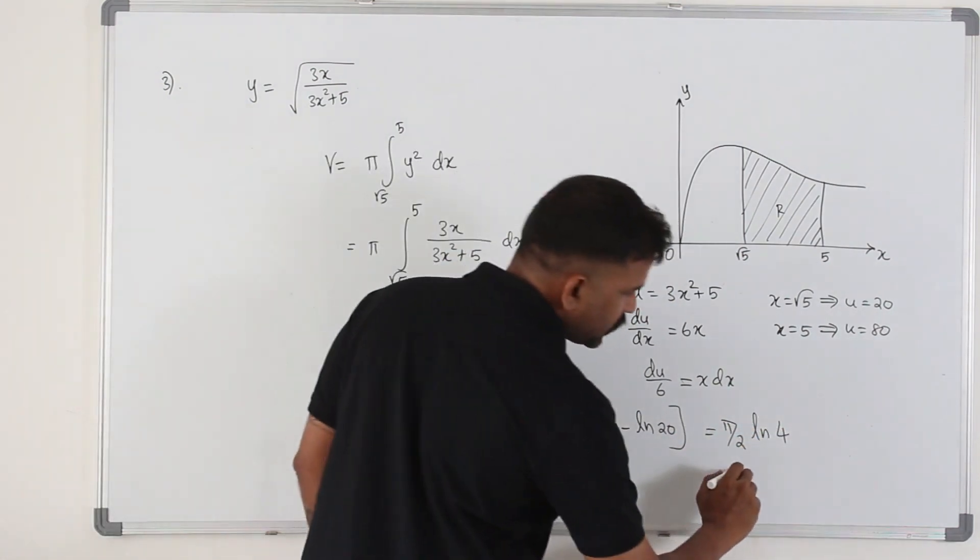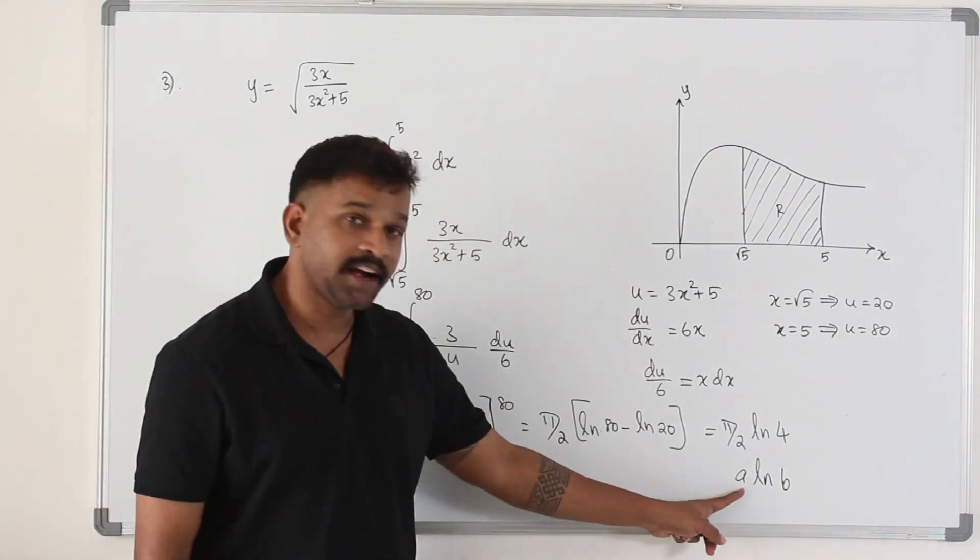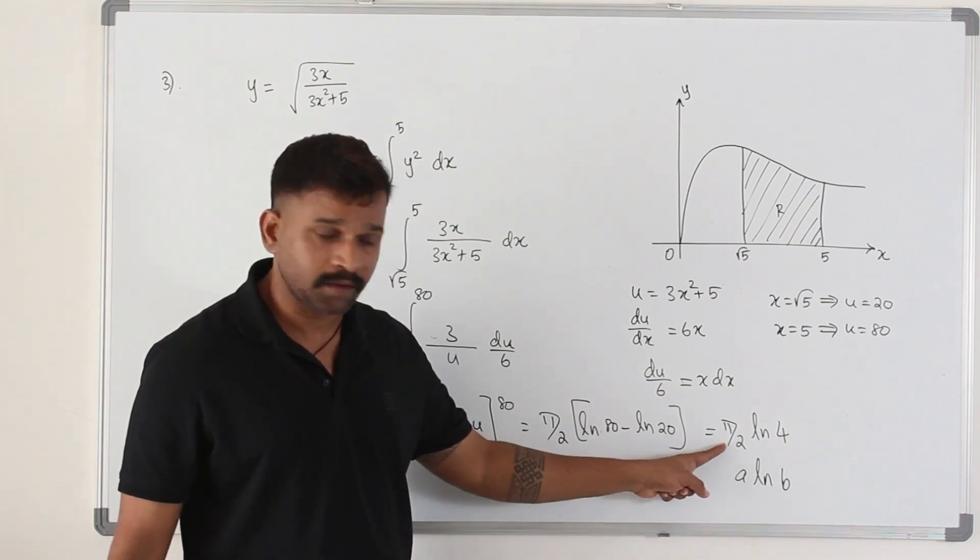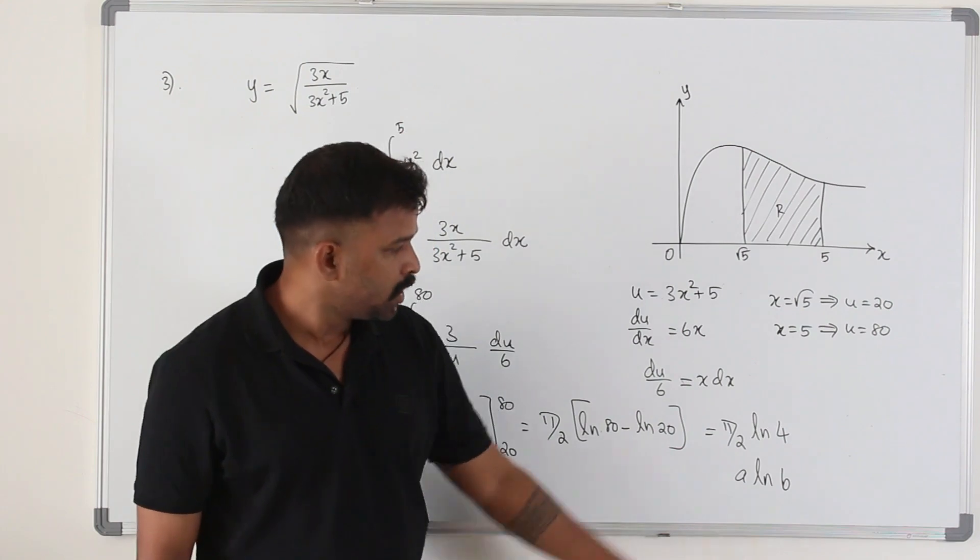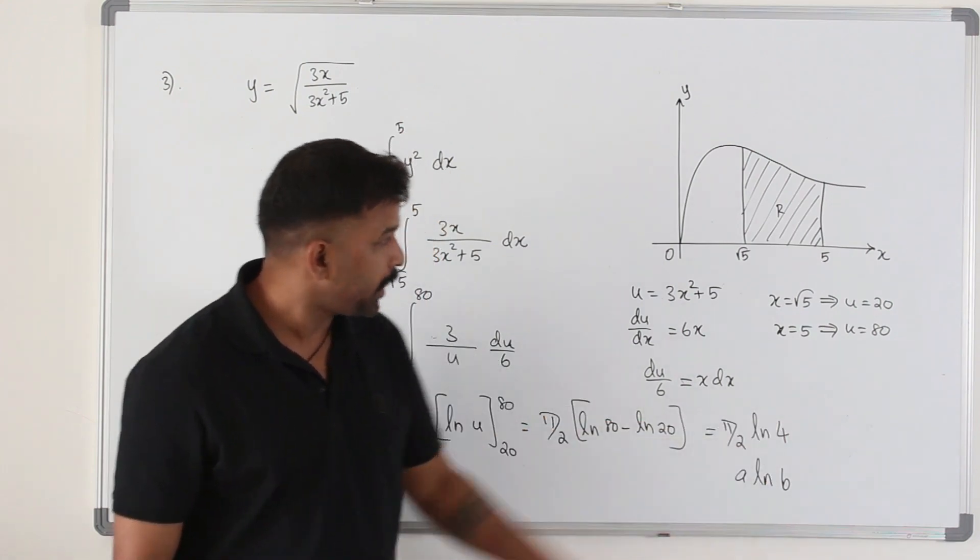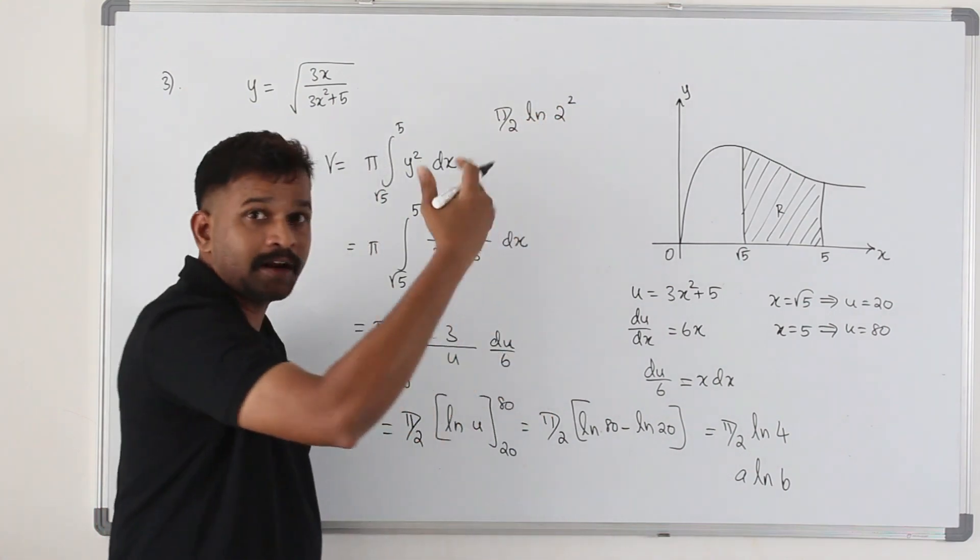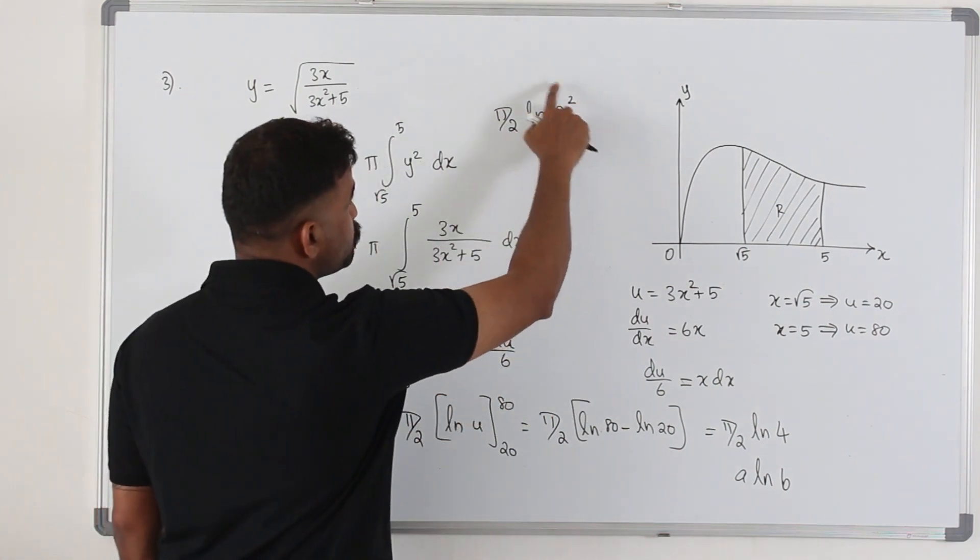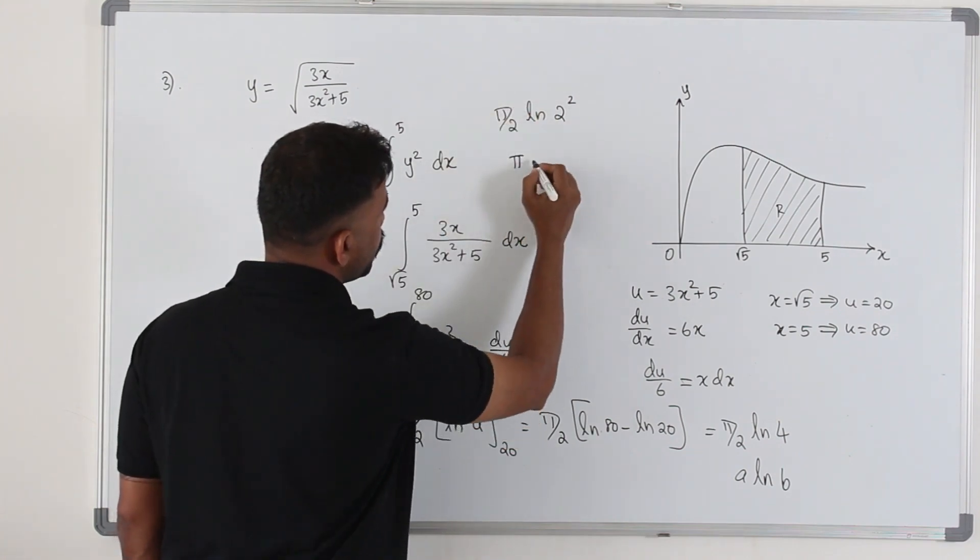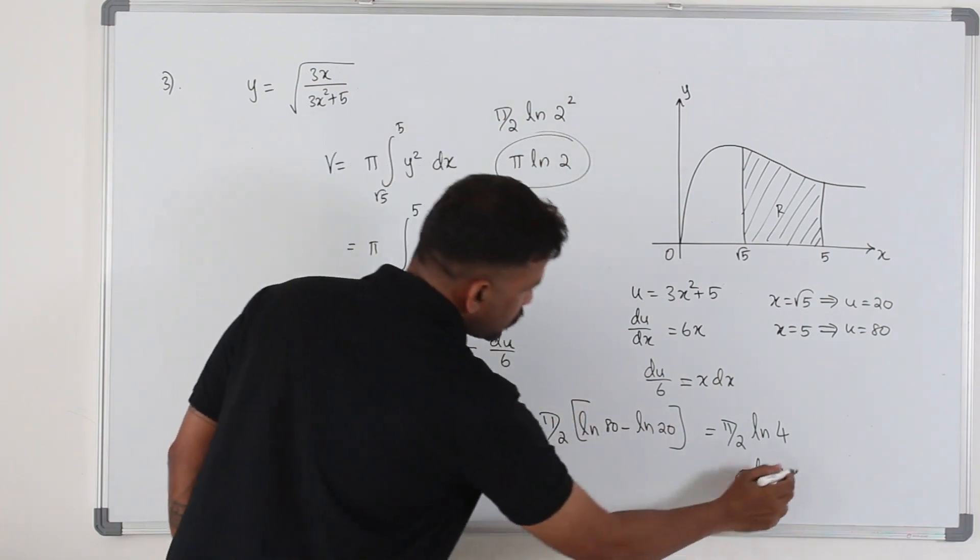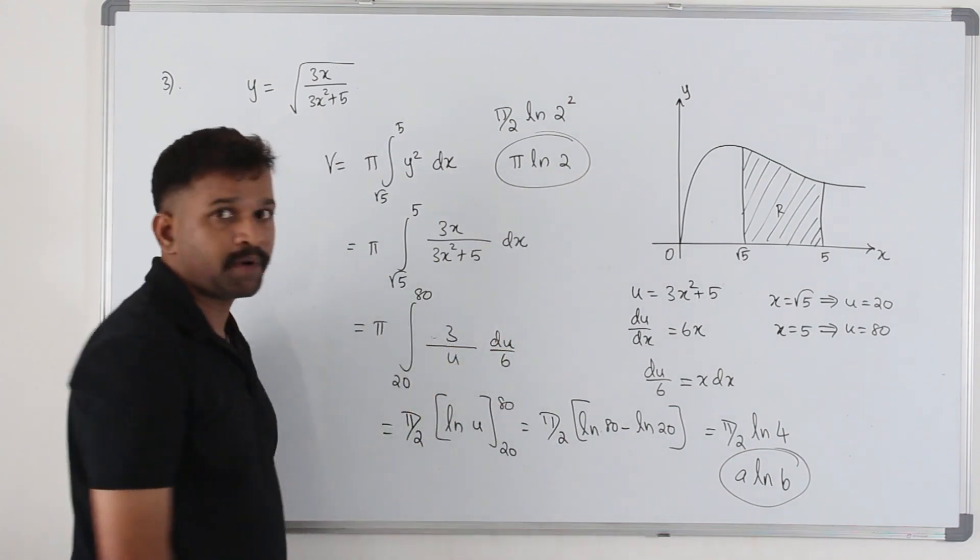They want the answer in this form A ln B. But if you read the question carefully, A is an irrational number. So this is an irrational number. B should be a prime number. 4 is not a prime number. So we are going to write 4 as 2 squared. So you can write this pi over 2 ln 2 squared. By applying laws of logarithm, put this power in front. So it becomes pi over 2 times 2 is pi ln 2. This looks exactly like this where A is an irrational number, B is a prime number.